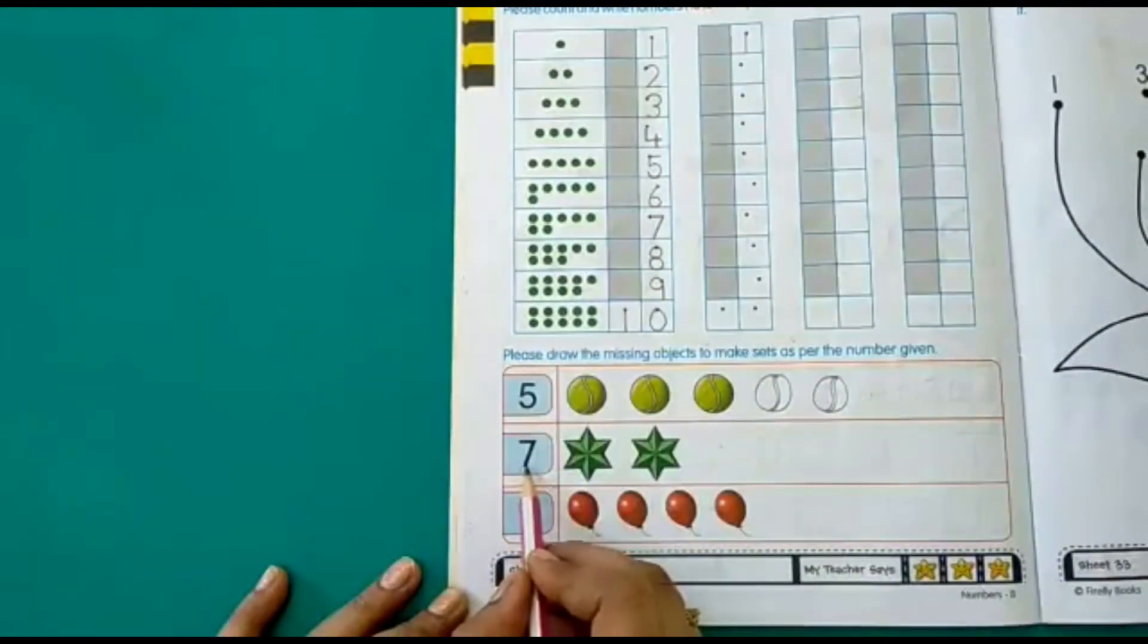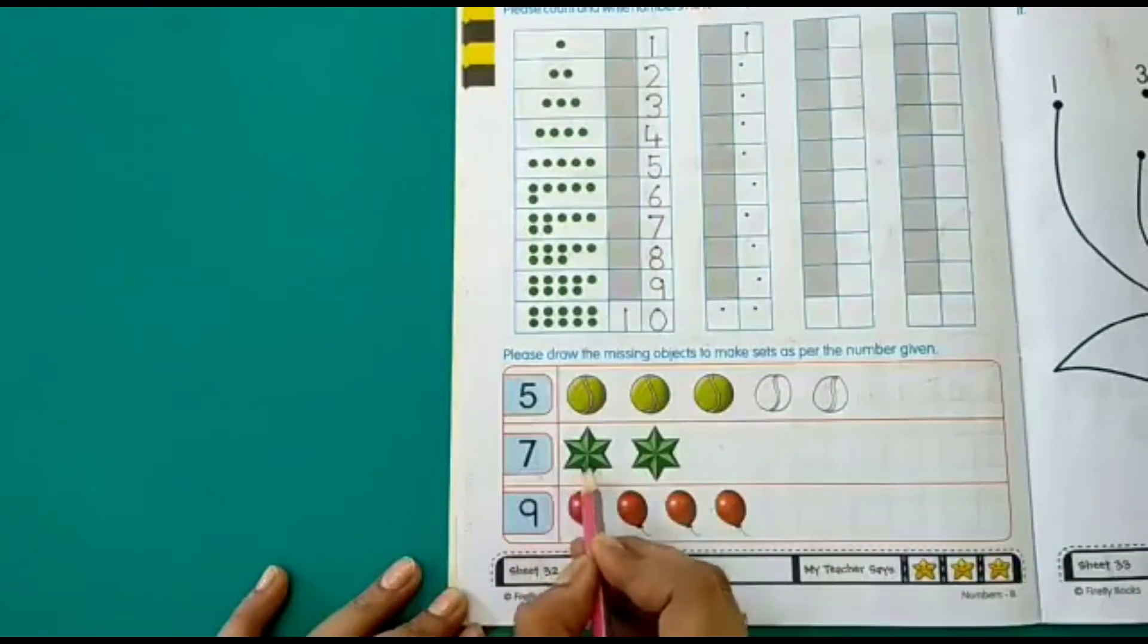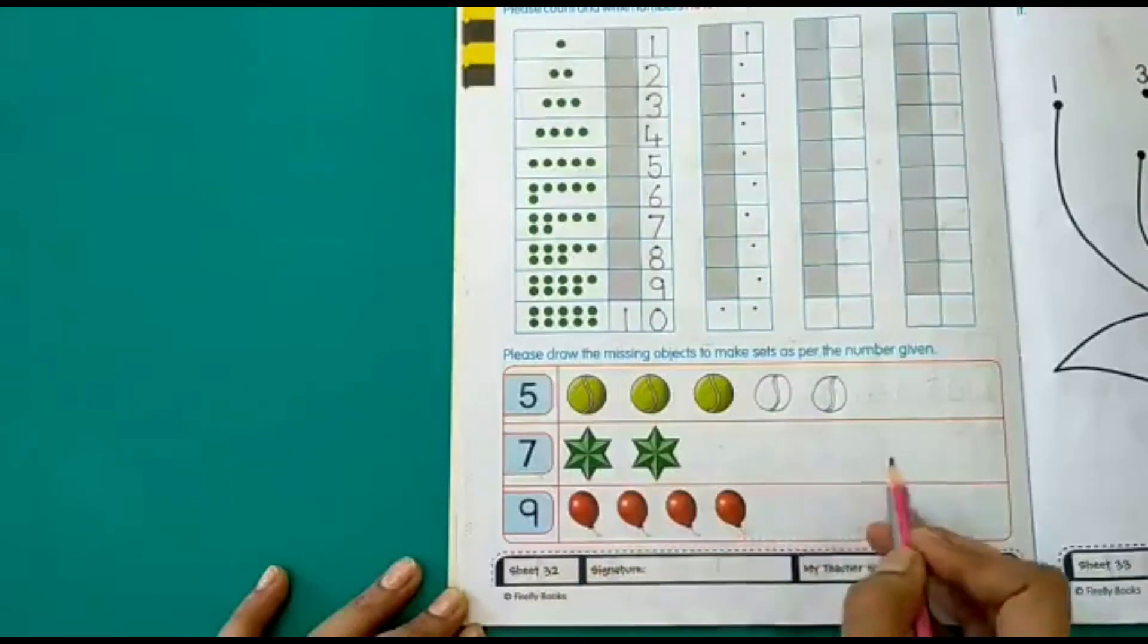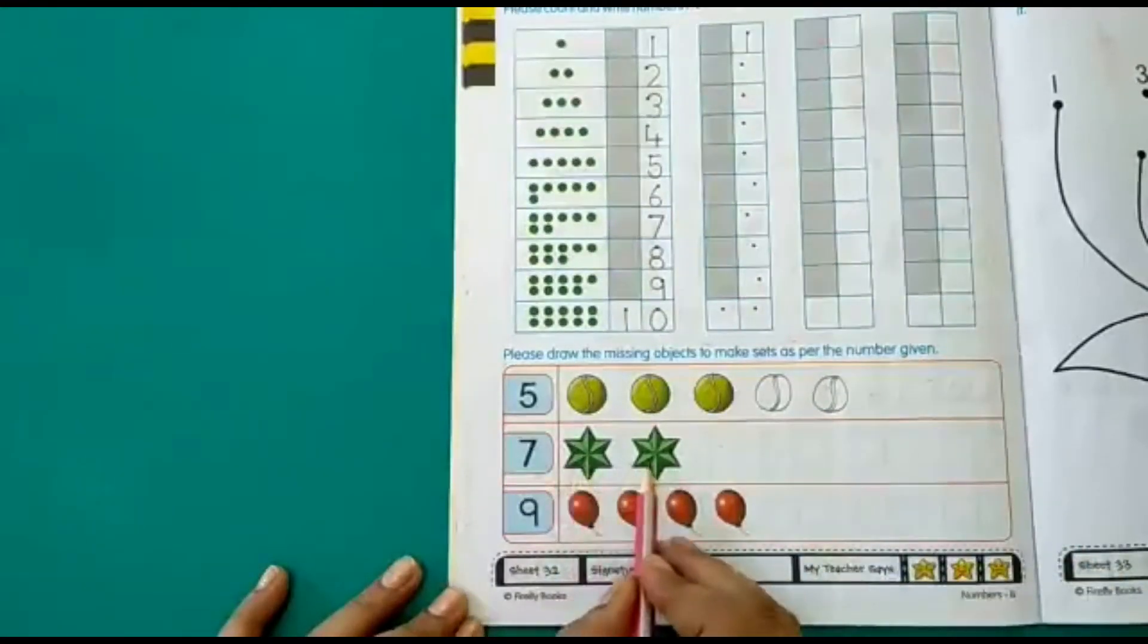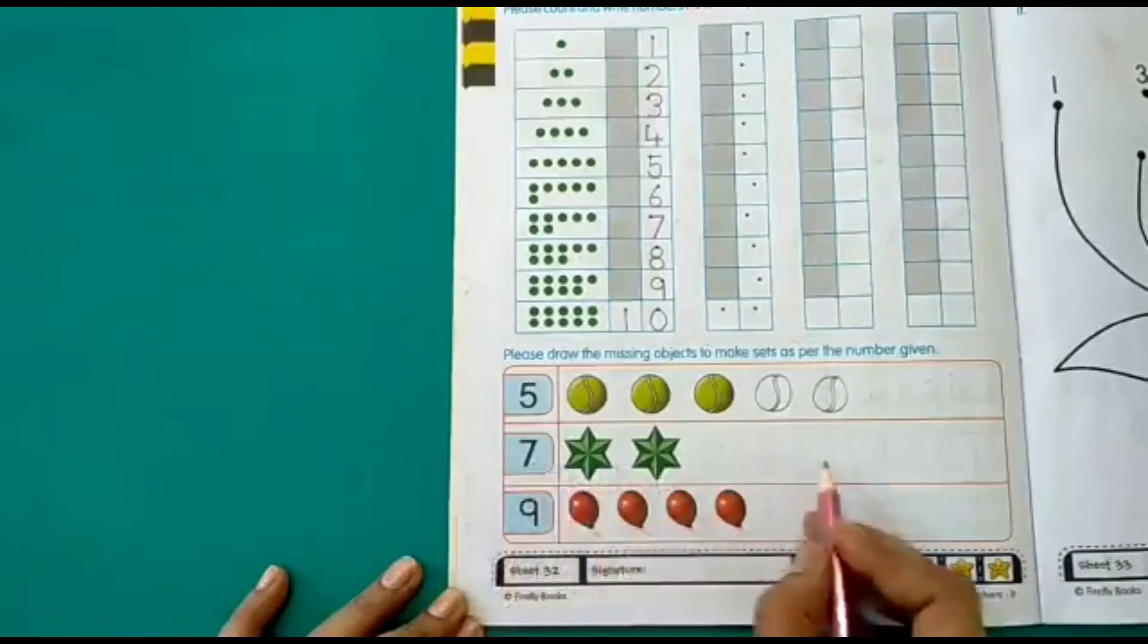you have to check what the number is and draw accordingly. Like we have the number 7 here. And so we have to draw 7 stars. We have only 2 stars here. So you have to count and draw the remaining stars to make it 7.